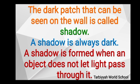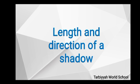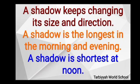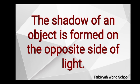A shadow has a different size at different times of the day. Shadows are longer in the morning or evening and shorter in the afternoon. A shadow keeps changing its size and direction. A shadow is longest in the morning and evening, and shortest at noon.